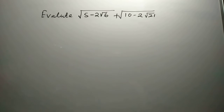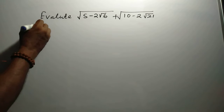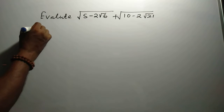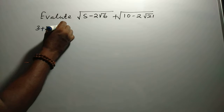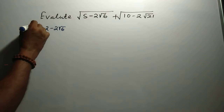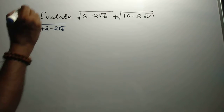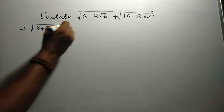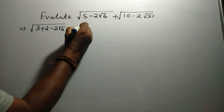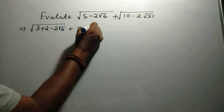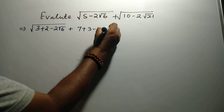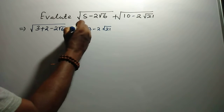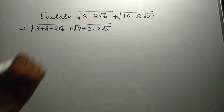Expanding: 5 = 3 + 2, so the first term becomes √(3 + 2 - 2√6). And 10 = 7 + 3, so the second term becomes √(7 + 3 - 2√21).